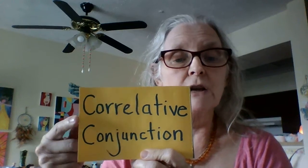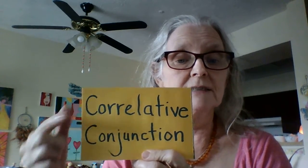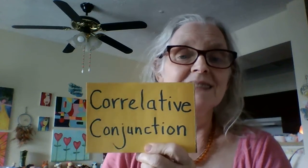This week I want to talk about correlative conjunctions. Co means together, relative means related. Now these do the same thing as coordinate conjunctions — they join two equal parts of a sentence — but the difference is correlative conjunctions are more than one word. They will be two words or more than two words.